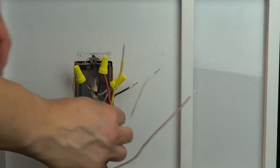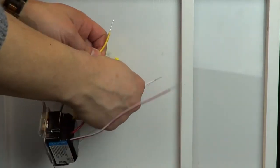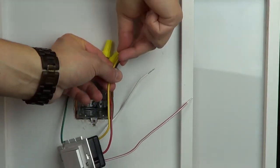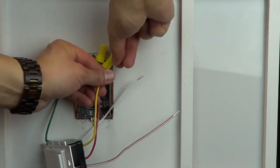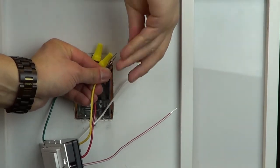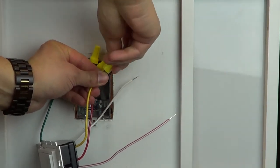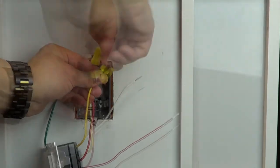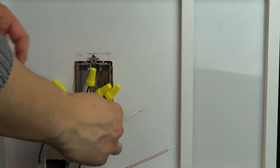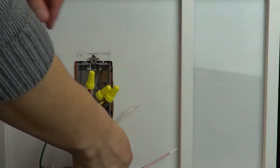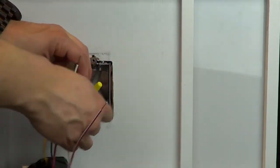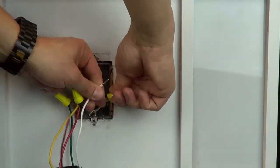Connect the remaining wire that goes to the light to the yellow wire on the new control. Connect the white wire to the neutral wires in your wallbox.